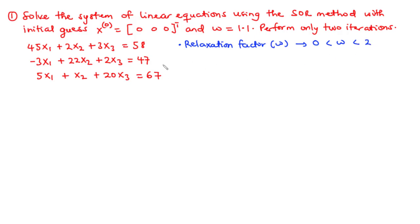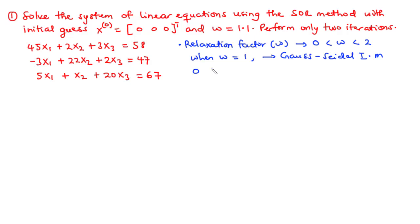When the relaxation factor omega is equal to 1, then we have the Gauss-Seidel iteration method. When omega lies in the range 0 < omega < 1, then we have successive under relaxation. However, when omega lies in the range 1 < omega < 2, then we have successive over relaxation.